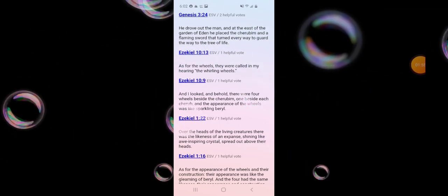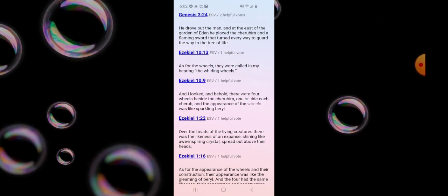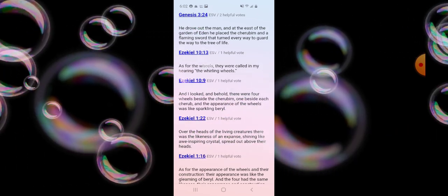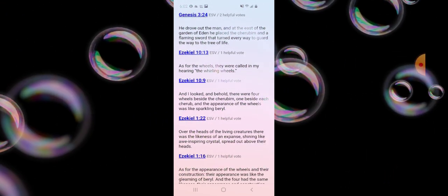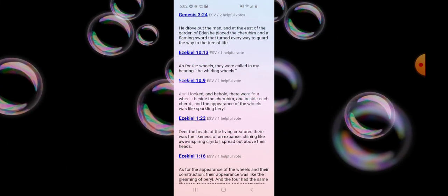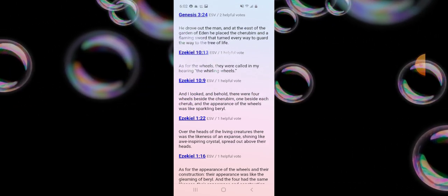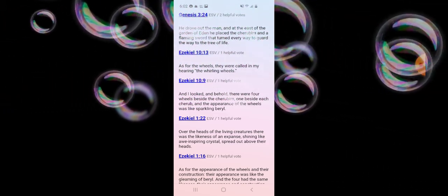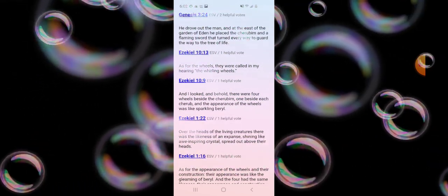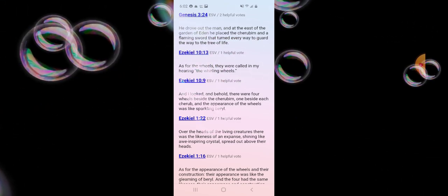In Ezekiel chapter 10 verse 13, as for the wheels, they were called in my hearing the whirling wheels, describing the chariots seen by Ezekiel. Ezekiel 10:9 says there were four wheels beside the cherubim, one beside each cherub, and the appearance of the wheels was like sparkling beryl. Ezekiel 1:22 describes over the heads of the living creatures the likeness of an expanse shining like awe-inspiring crystal spread out above their heads.